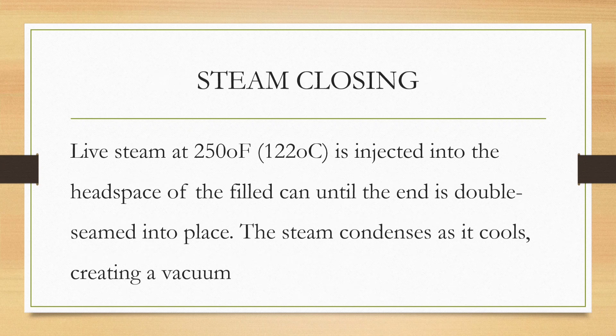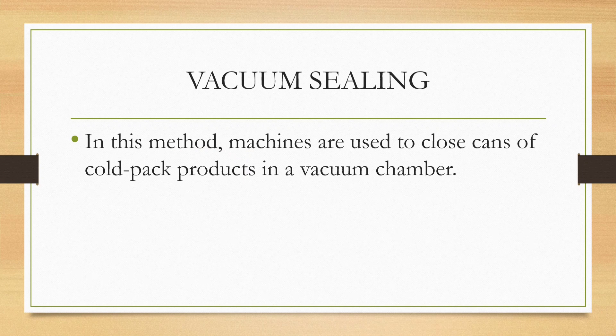The second process is steam closing: steam at 250 degrees Fahrenheit is injected into the headspace of the filled can. When the steam condenses as it cools, it creates a vacuum, removing the oxygen from the can. The third process is vacuum sealing, where cold-packed products are packed in a vacuum chamber.